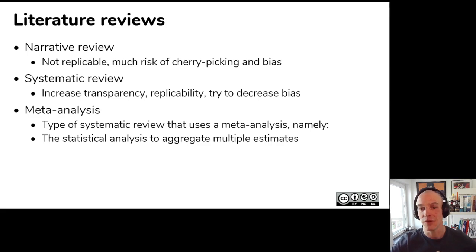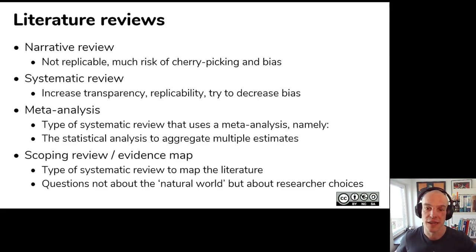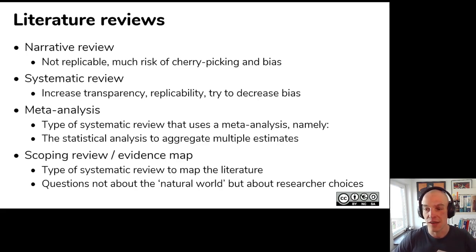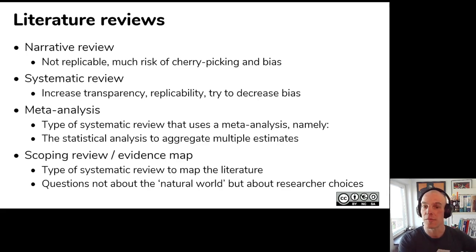Another type is called a scoping review, sometimes called an evidence map. There you don't actually look at the results of studies — you just look at the kind of research people did. After a scoping review you have a good overview of the literature: how many people did experiments, how many looked at mediators, how many did qualitative studies. That's a good starting point before doing systematic reviews where you actually look at what they found. Looking at results and study quality is a lot of work, so scoping reviews let you first map the field and then do targeted systematic reviews only where it's worthwhile.